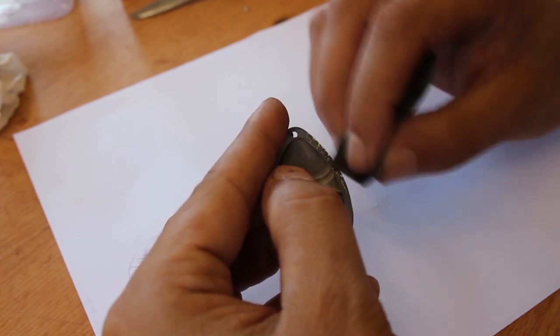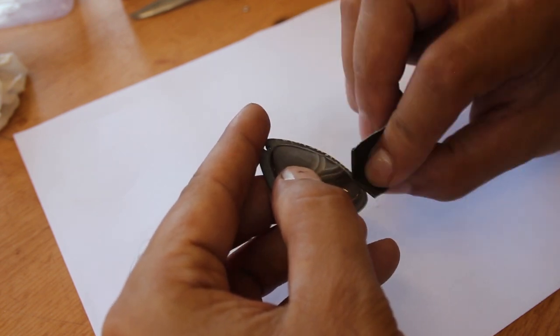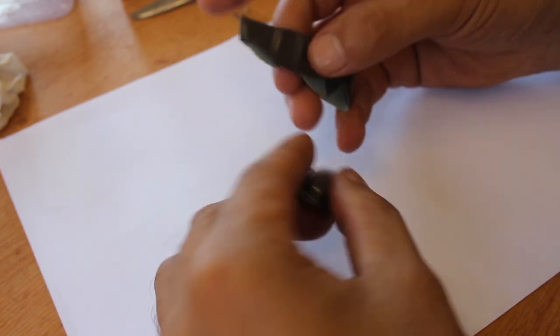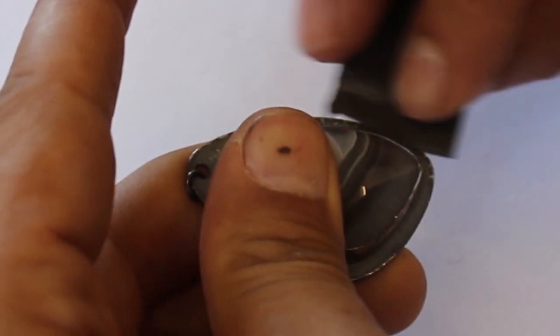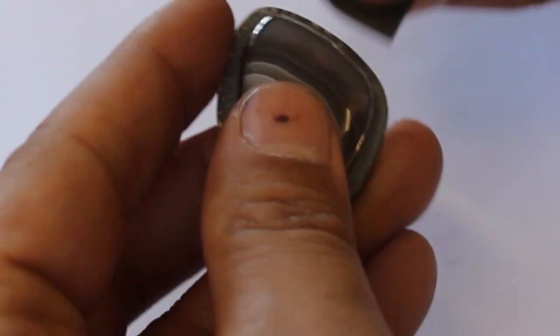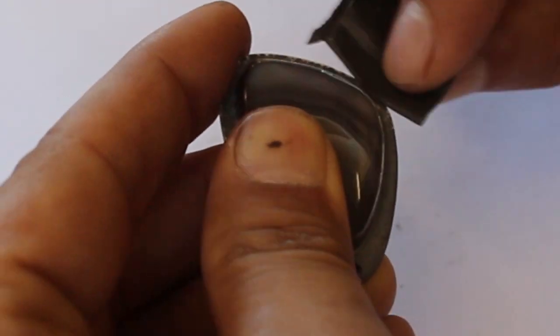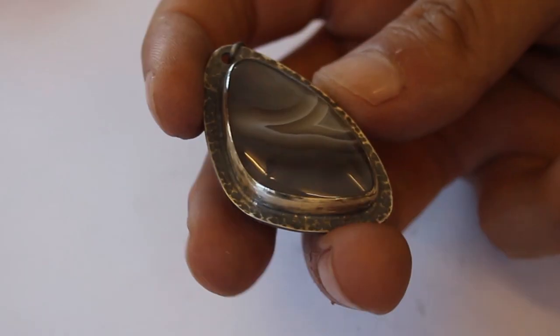And finally, to bring out all those beautiful hammered textures, I took a piece of 500 grit emery paper, sanded over the whole piece, revealing all of the lovely textures, and just bringing the piece to life. And this is what I was left with.